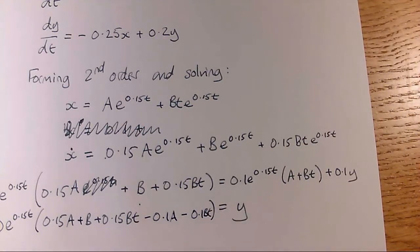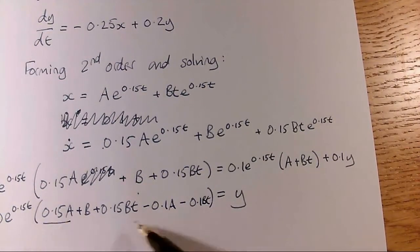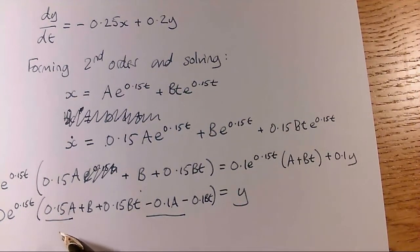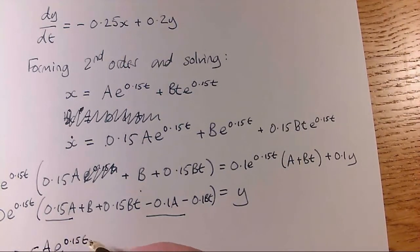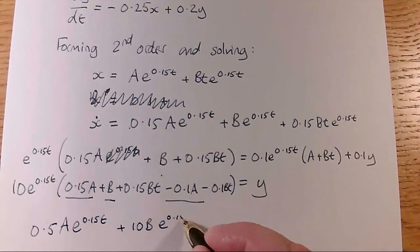And so I just need to simplify this, so I probably have to multiply 3 by the 10. So what have I got? I've got 0.15a minus 0.1a times 10, so that's 0.5a e to the 0.15t. And then I've got just a b times 10, so plus 10b e to the 0.15t.